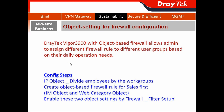The configuration steps are: first, create different IP objects in order to divide employees by their work group, and then create the object-based firewall rule.